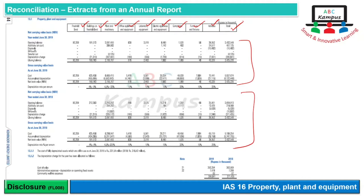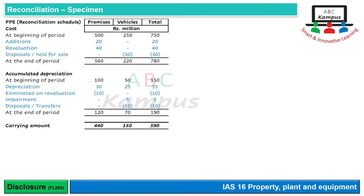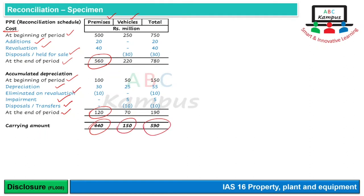Reconciliation ka ek specimen dekhte hain: opening balance bataya, phir additions add ho gaye, revaluation ki wajah se izaafa hua, disposal ya held-for-sale ki wajah se kami hui, aur end of period par cost aa gayi. Isi tarah accumulated depreciation and impairment bhi banaya — opening balance tha, depreciation se badh gayi, revaluation par eliminate hoti hai to kam hui, impairment ki wajah se izaafa hua, disposal ke saath eliminate hoti hai. End of period figures aa gayi.